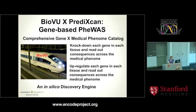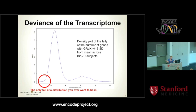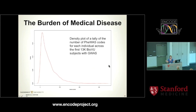It actually works at larger scale. The deviance of the transcriptome — the tally of the number of transcript levels where people are at least three standard deviations from the mean, plus or minus — is significantly correlated with the burden of medical disease, specifically the number of phenome codes people accumulate in their lifetime. Most people in BioVU have relatively small numbers of phenome codes, around 15 or 20, but there are plenty with very large numbers. When you have a chronic disease, you accumulate phenome codes rapidly because disease begets disease.